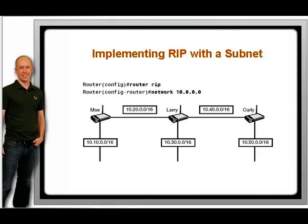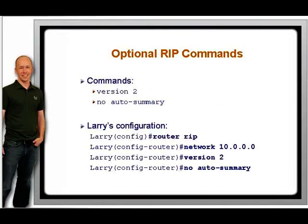Finally, you may enter some optional commands. The two optional commands that you should be familiar with for the exam are Version 2 and No Auto Summary. Both commands are entered under the RIP routing process. The first command, Version 2, enables RIP Version 2 on your router. RIP Version 2 adds the benefits of optional authentication, multicast updates, summarization, and classless routing.